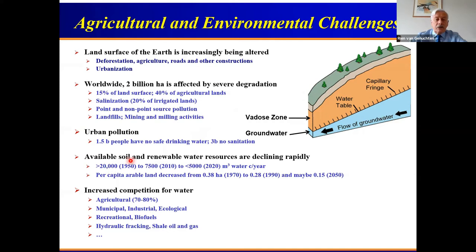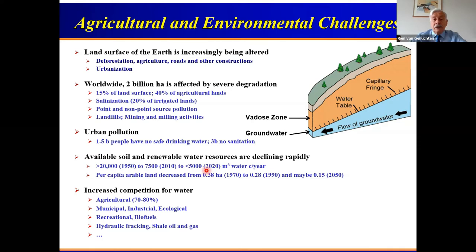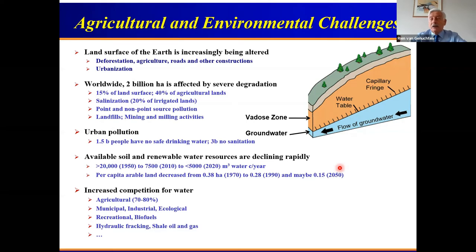The one thing I'm very much concerned about is that the amount of water per capita per year is decreasing quite rapidly. It used to be more than 20,000 cubic meters per year per capita; now we have barely 5,000. The per capita arable land for agriculture has also been decreasing severely — from about 0.4 hectares in 1970 to an estimated 0.15 hectares per capita in 2050 — which means we have to increase the efficiency and productivity of arable land.